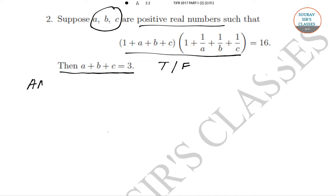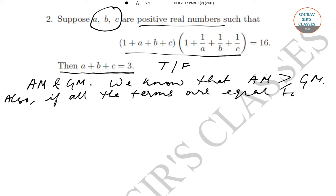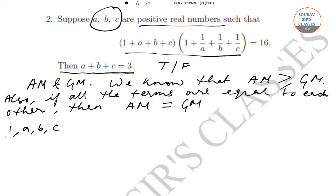We will use the relationship of arithmetic mean and geometric mean. We know that the arithmetic mean is always greater than or equal to the geometric mean. Also, if all the terms are equal to each other, then the arithmetic mean equals the geometric mean. Let us consider the numbers 1, a, b, c.